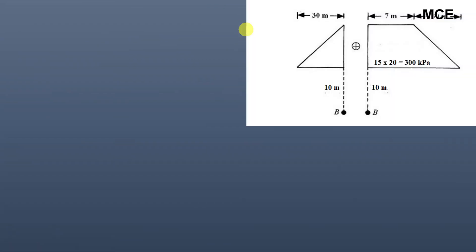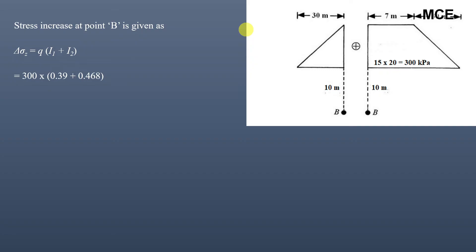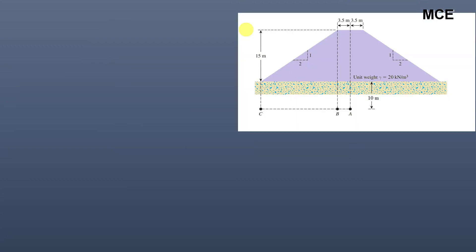The vertical stress increase at point B is the sum of contributions from the triangular and trapezoidal portions: Δσ = 300 × (0.39 + 0.468) = 300 × 0.858 = 257.4 kPa.